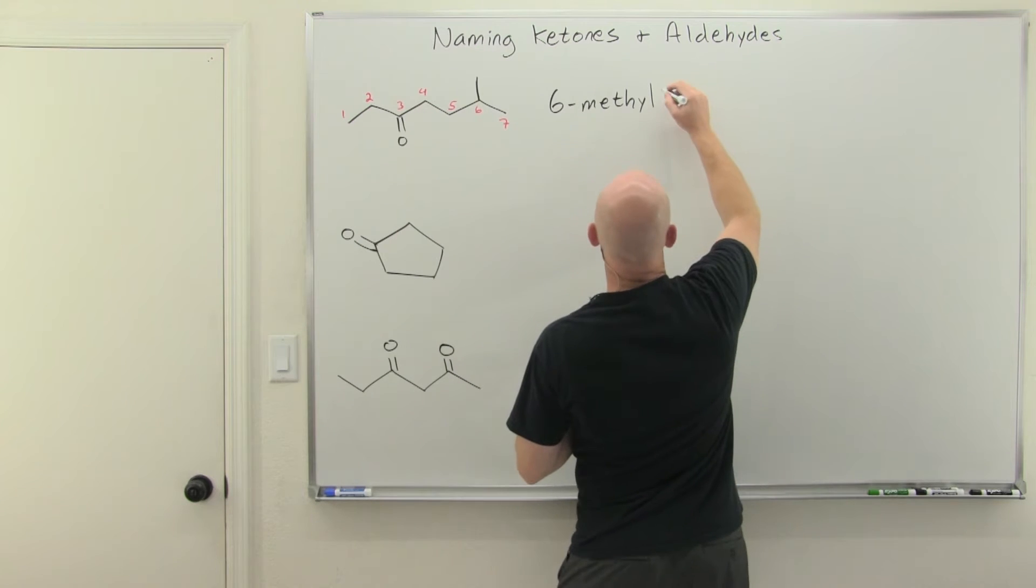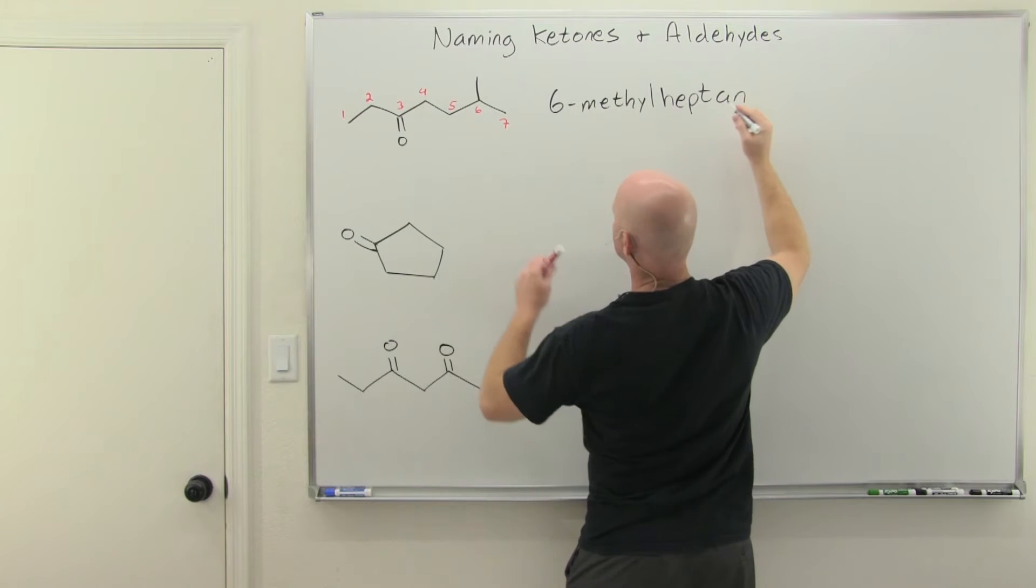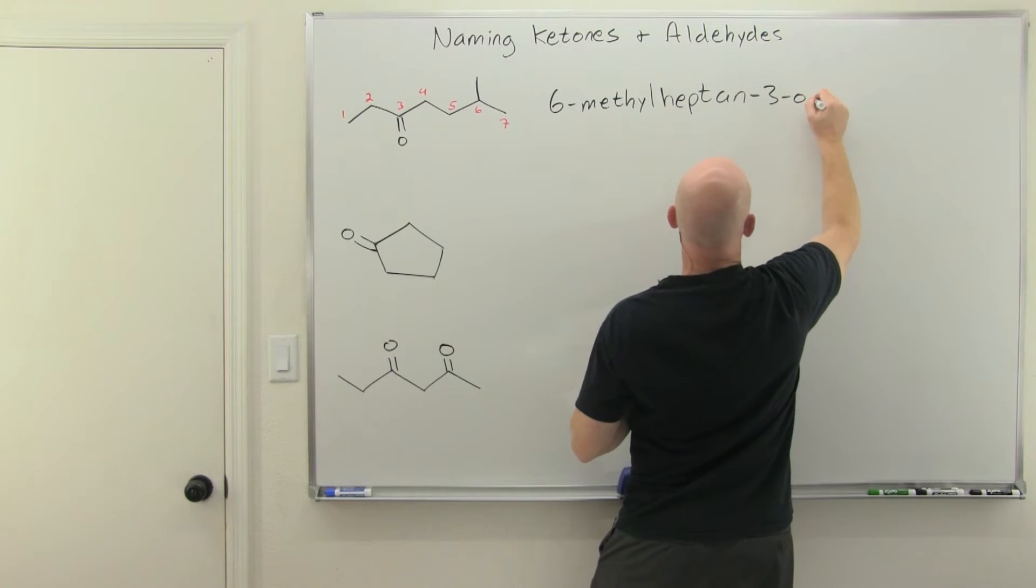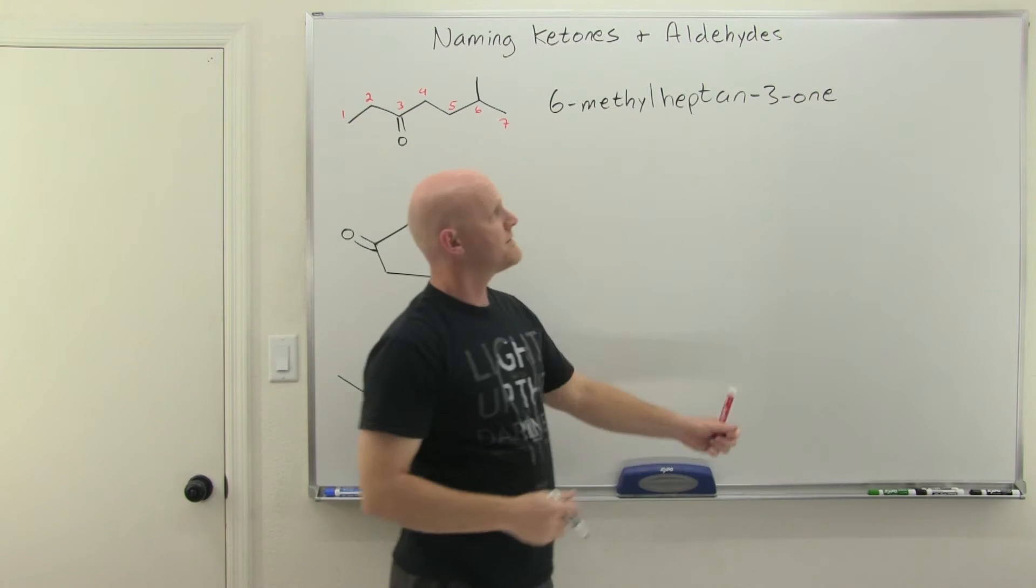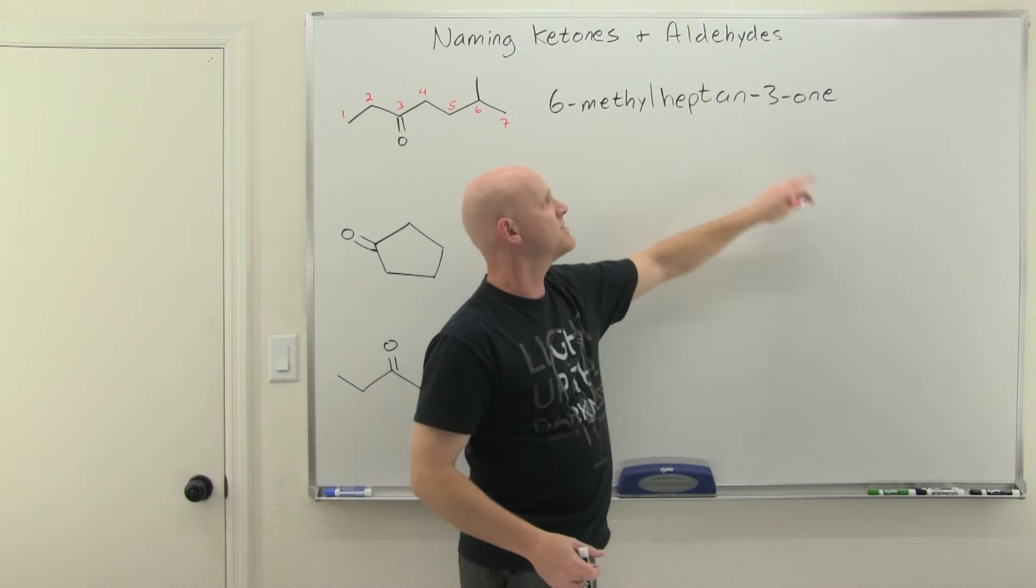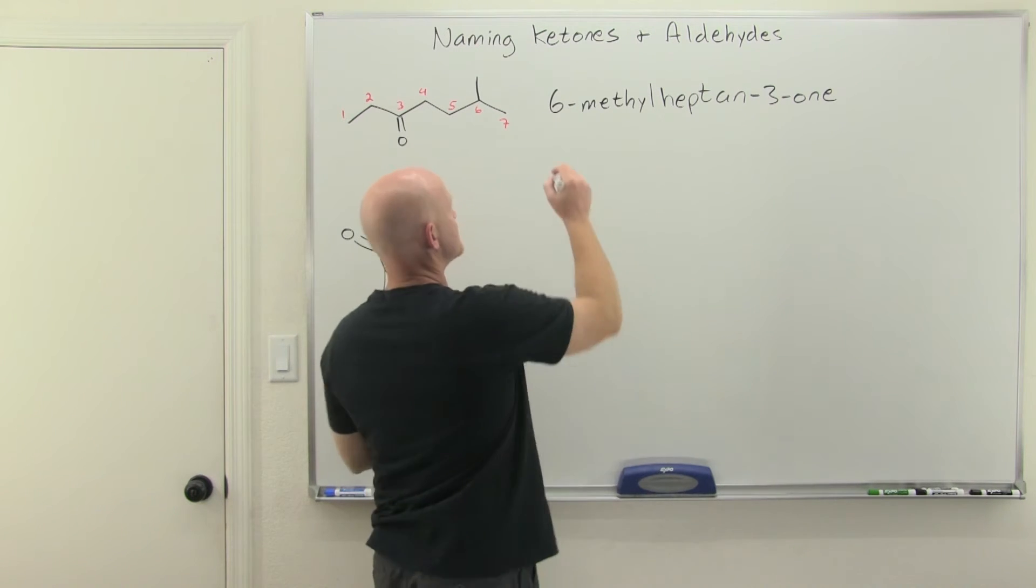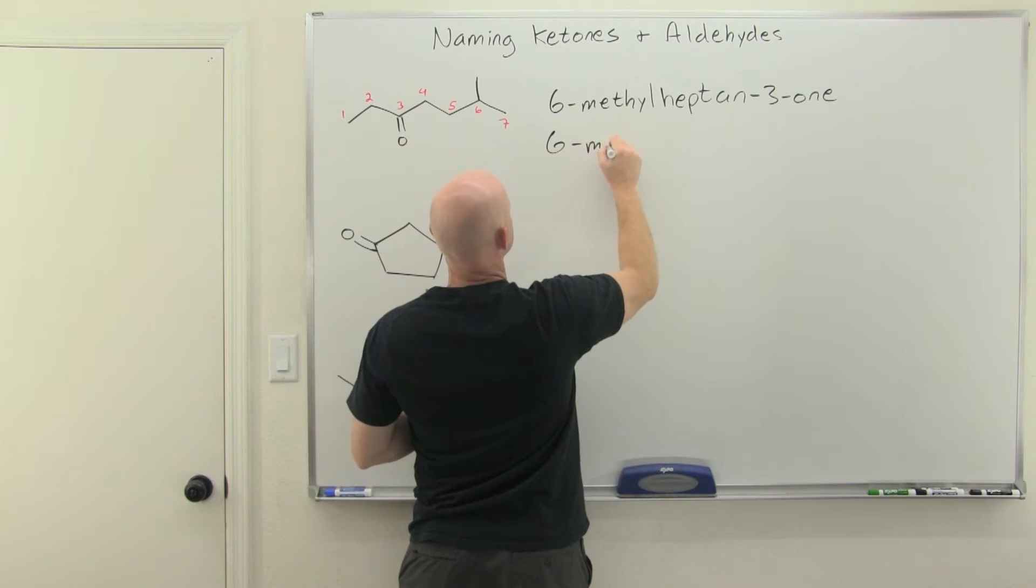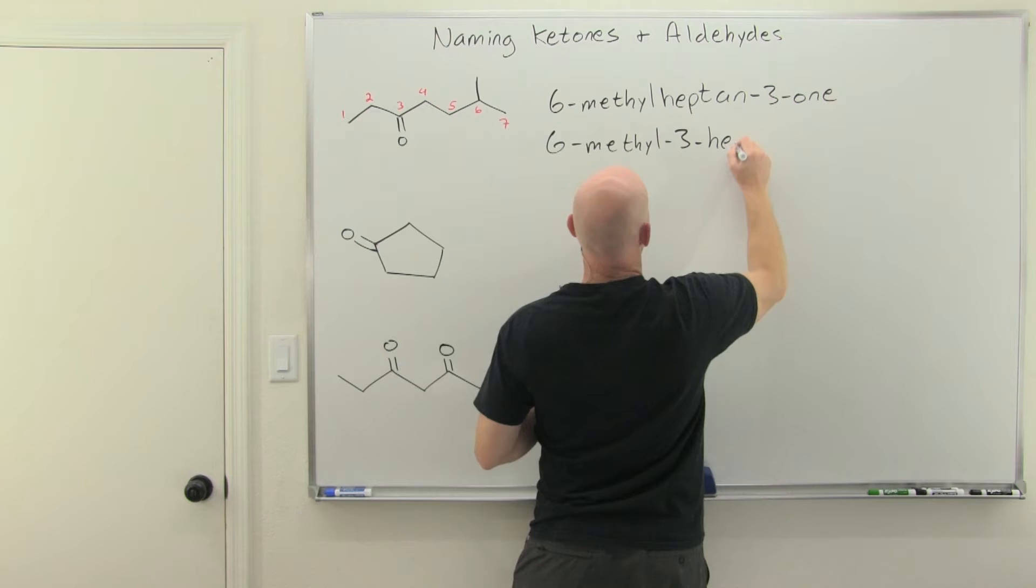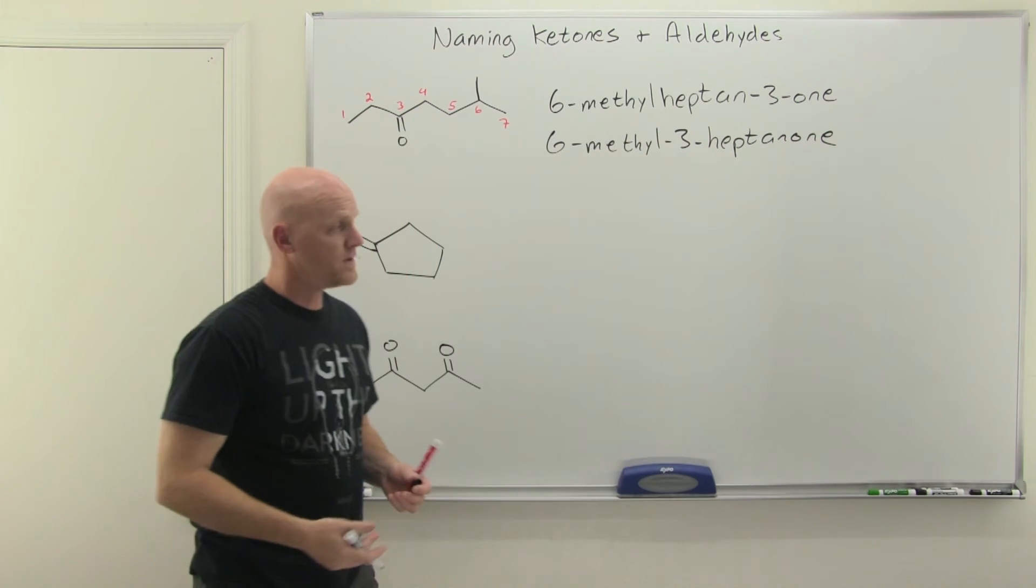We've got one of two options here. We can do heptan, and then before one, we got to give the location. So it could be heptan-3-one. However, we've seen this in the past as well, if you only have one major functional group in your parent chain, you can put the number, the chain locator for it at the beginning of the parent chain as well. So we could also call this 6-methyl-3-heptanone.